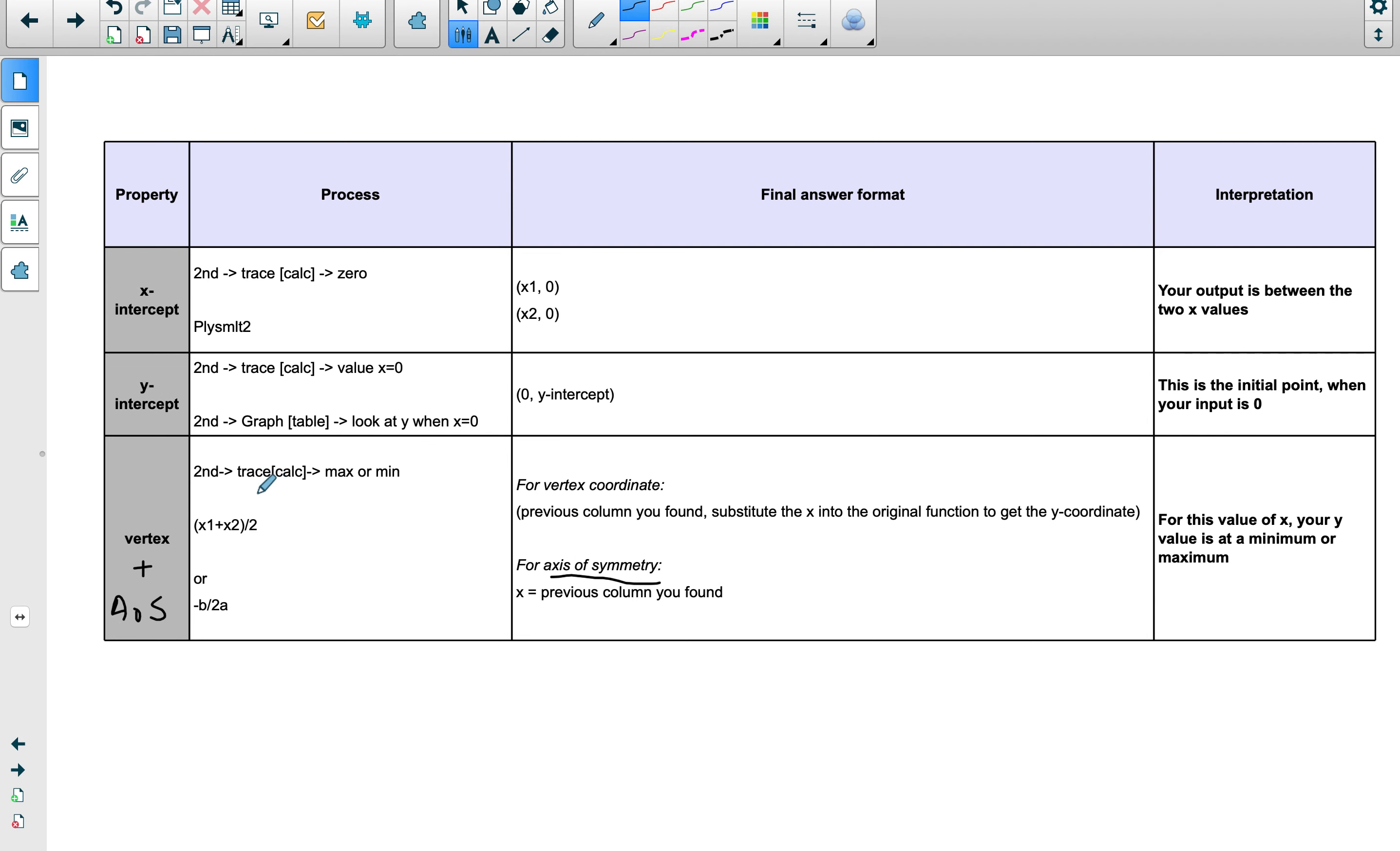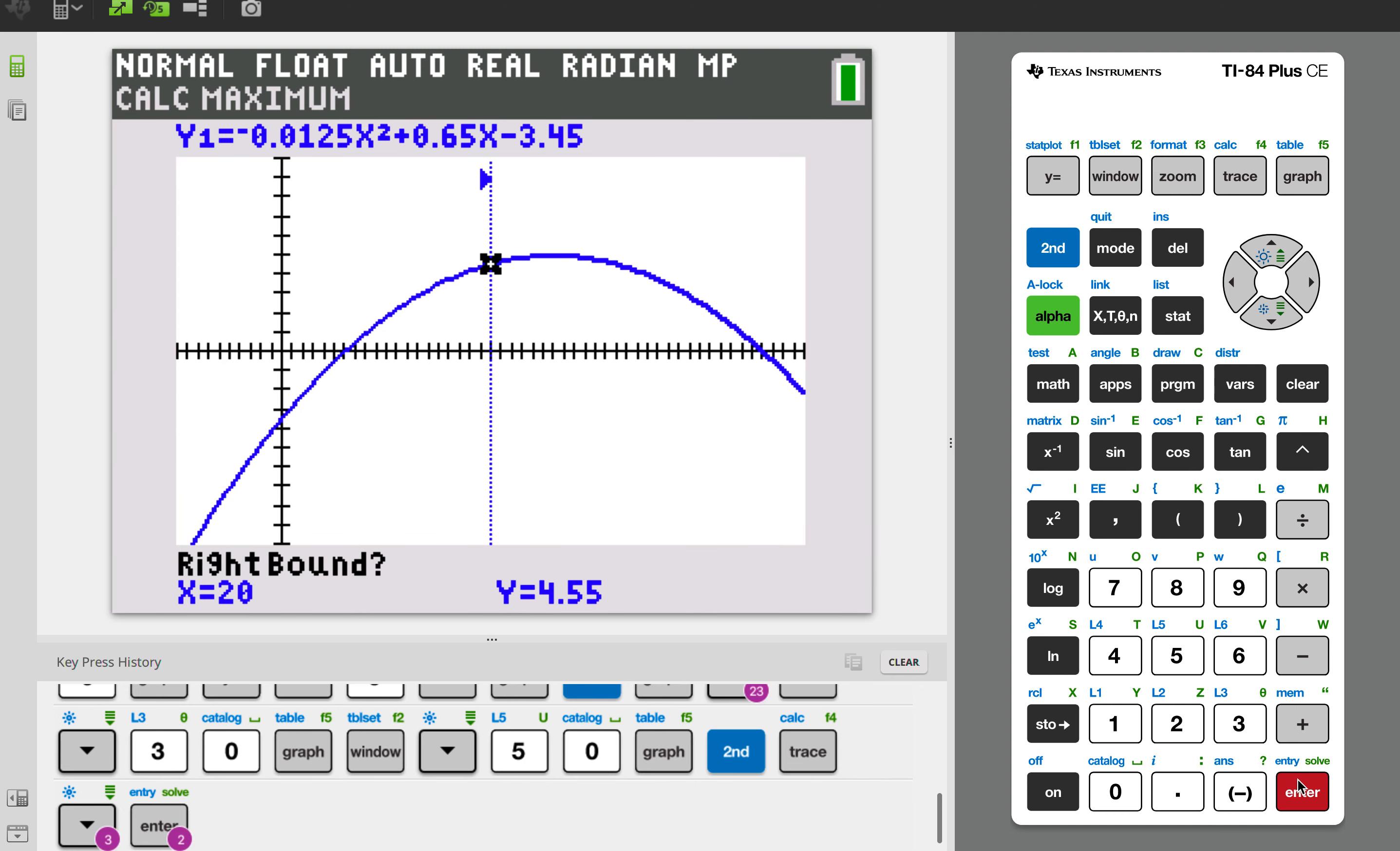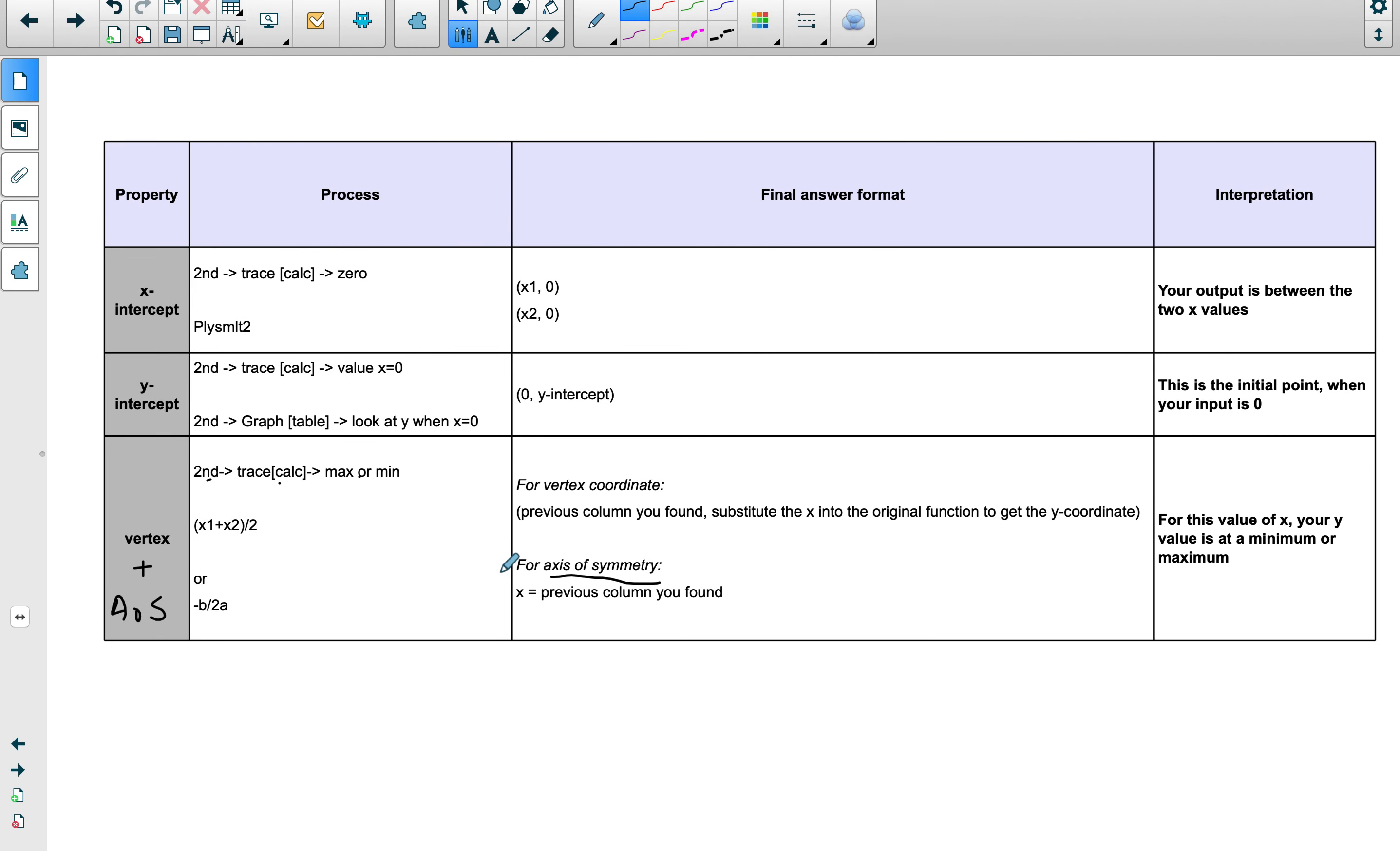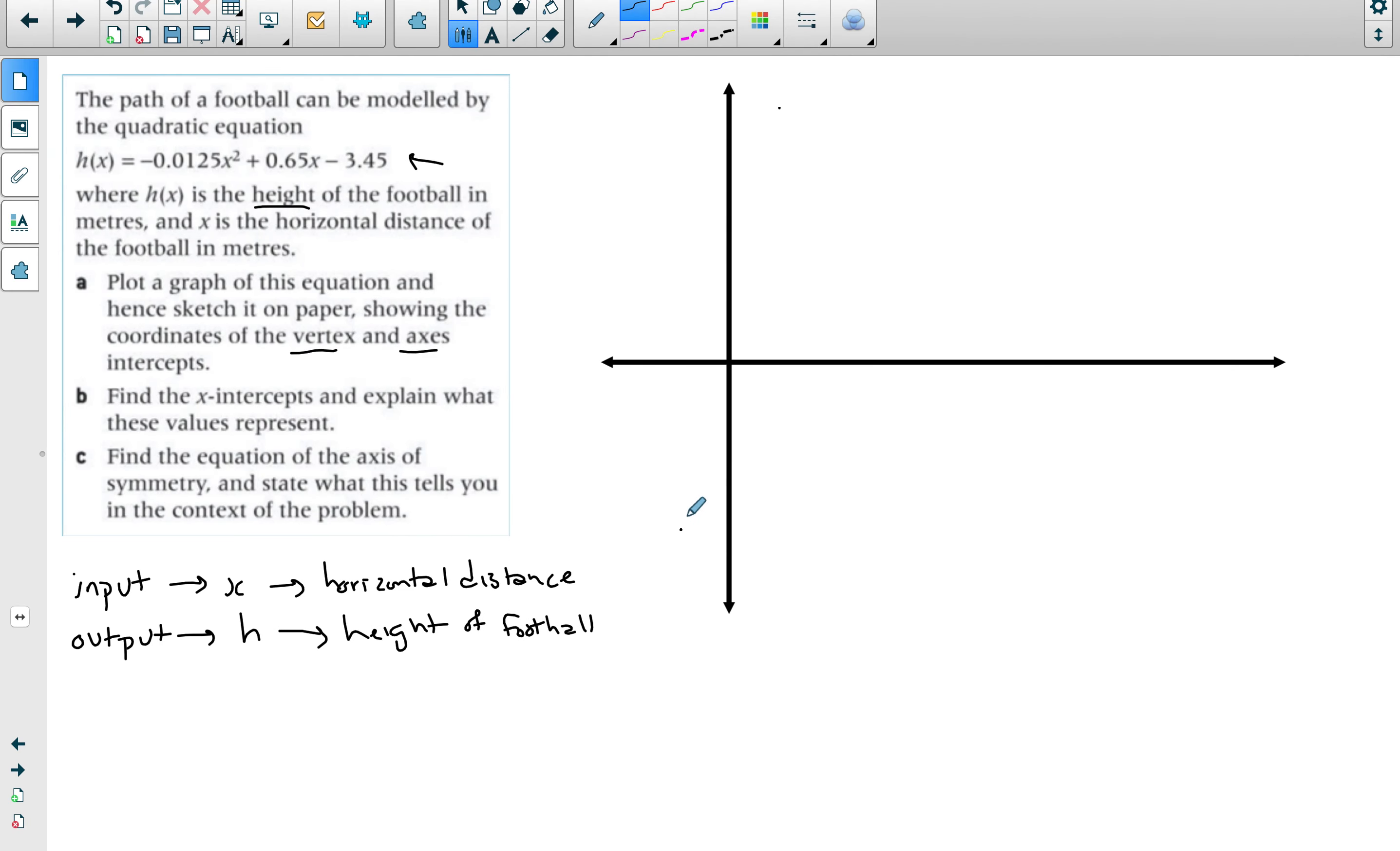For the vertex we can go to second trace and find the maximum or minimum. I can see that mine is a maximum, so I go to maximum. I'll pick the left bound, I'll go and pick the right bound. This is explained more thoroughly in another video. I'm going to get 25.99 which is about 26, so you can go for 26 comma 5. I need to identify this as 26 comma 5.